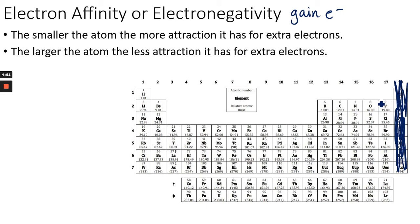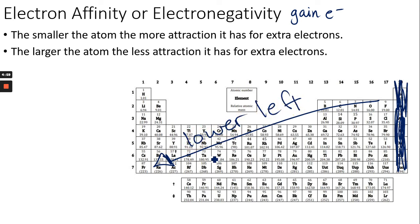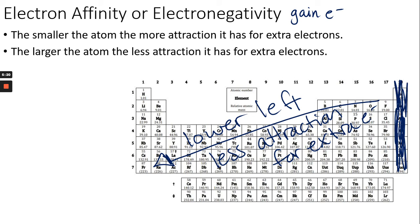Going from the upper right down to the lower left, the lower left has less attraction for extra electrons. Francium, being the largest atom, is not going to easily attract another electron. It loses its electron really easily, but it cannot gain an electron easily.